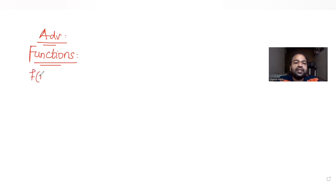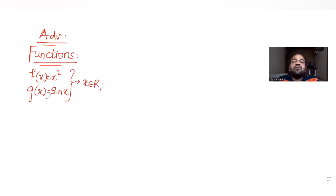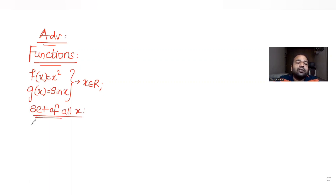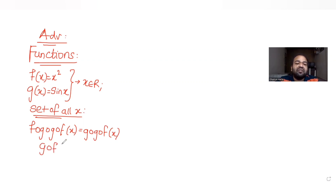In this question, it is given that f(x) = x² and g(x) = sin(x). These functions are defined for all x belonging to ℝ. We need to find the set of all values of x which satisfy the expression f(g(g(f(x)))) = g(g(f(x))), where g∘f(x) means g of f(x).